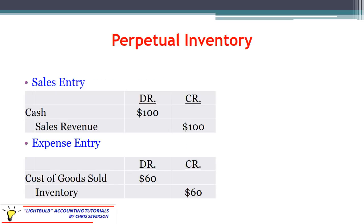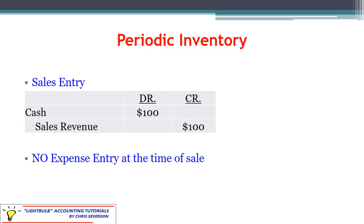If we have a perpetual inventory system, they're going to do both of those journal entries at the same time — the sales entry and the expense entry — every transaction would have both. You'll see them merged together; I separated them out intentionally, but in an actual journal you would see them merged. Keep in mind, the higher price is generally the selling price and the lower amount is generally the cost — otherwise the company is not going to be in business very long. With periodic inventory, we're still going to have that sales entry, but we will not have an expense entry at that time. Instead, we'll have one big expense entry at the end of the period.